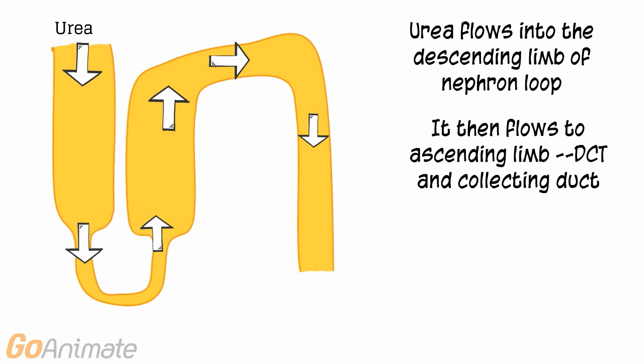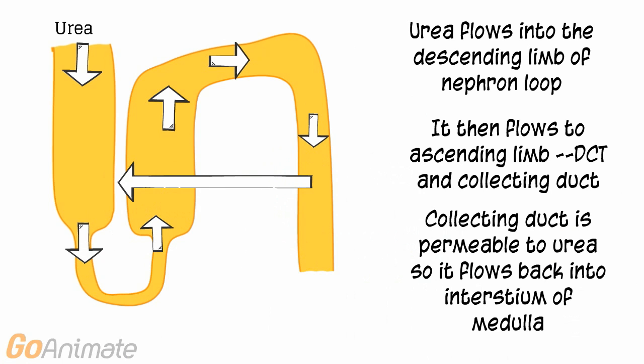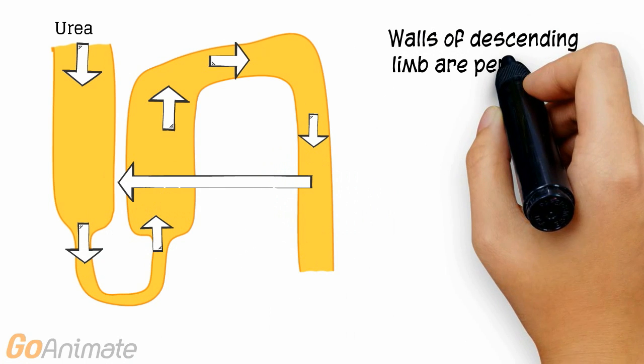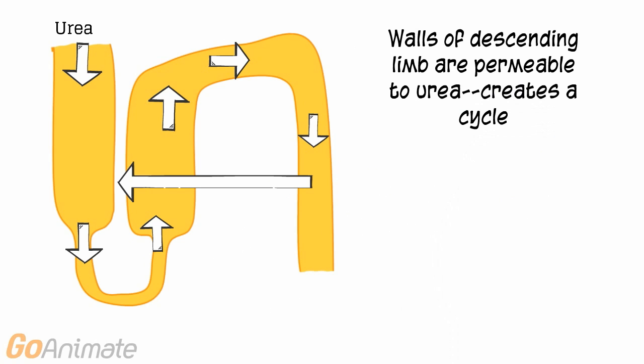The collecting duct is permeable to urea, so it flows back into the interstitium of the medulla. Urea can move back into the descending limb of the nephron loop because it is permeable to urea. This creates a cycle which works to maintain the high solute concentration gradient in the medulla.